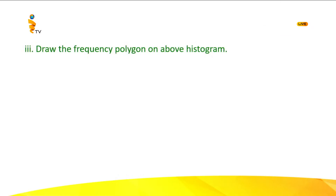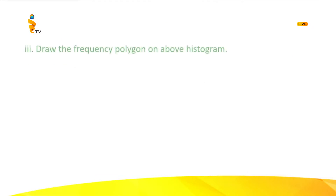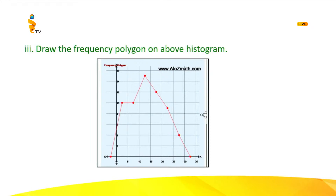The third part is: draw the frequency polygon on the above histogram. To draw the frequency polygon, you have to mark the midpoints on the top of each column and then join them. Since it is a polygon — a rectilinear closed figure — once you mark the midpoints and join them, you will not obtain a closed polygon unless you also mark the midpoint of the intervals 0 to negative 5 and 30 to 35. Then join everything using a ruler to get a closed rectilinear plane figure.